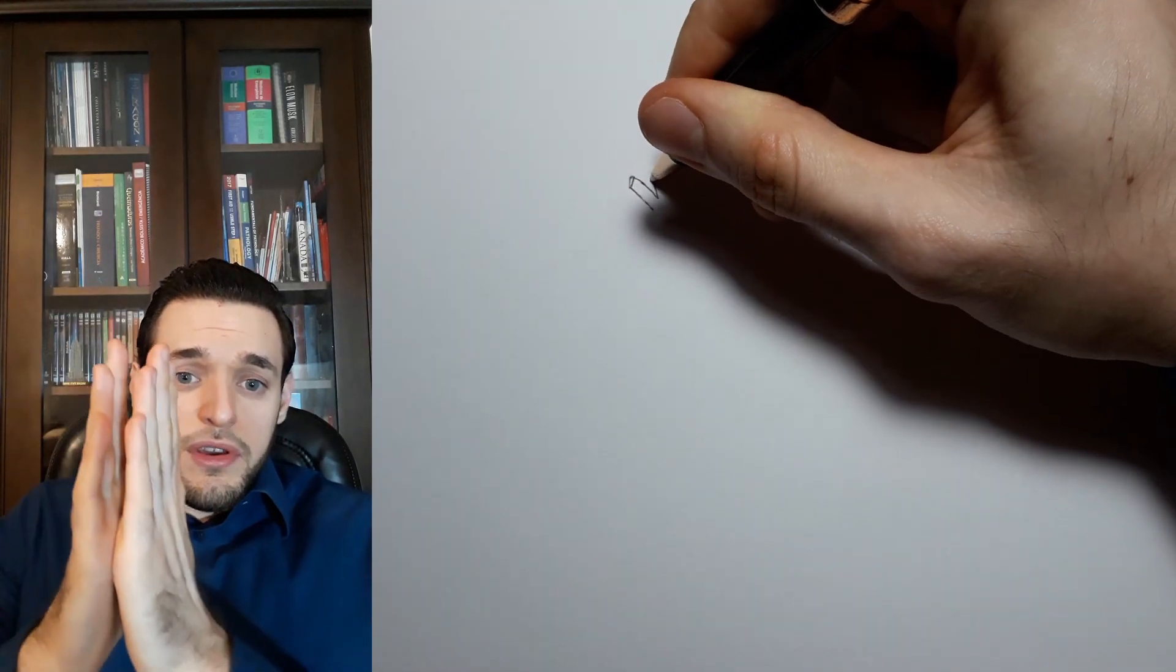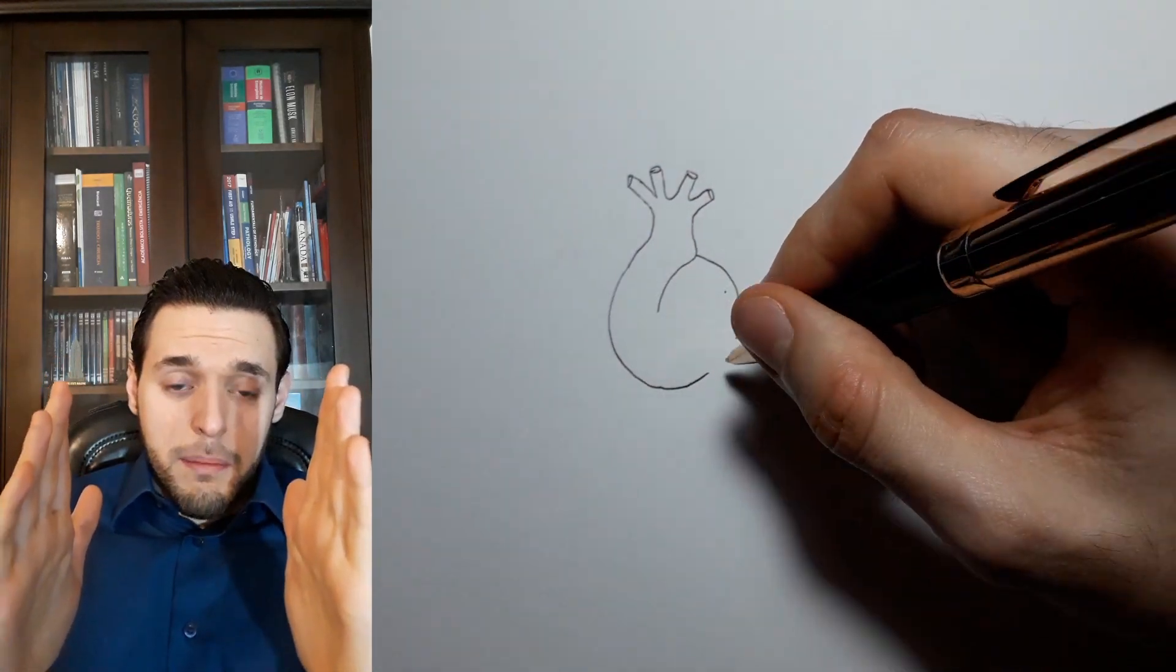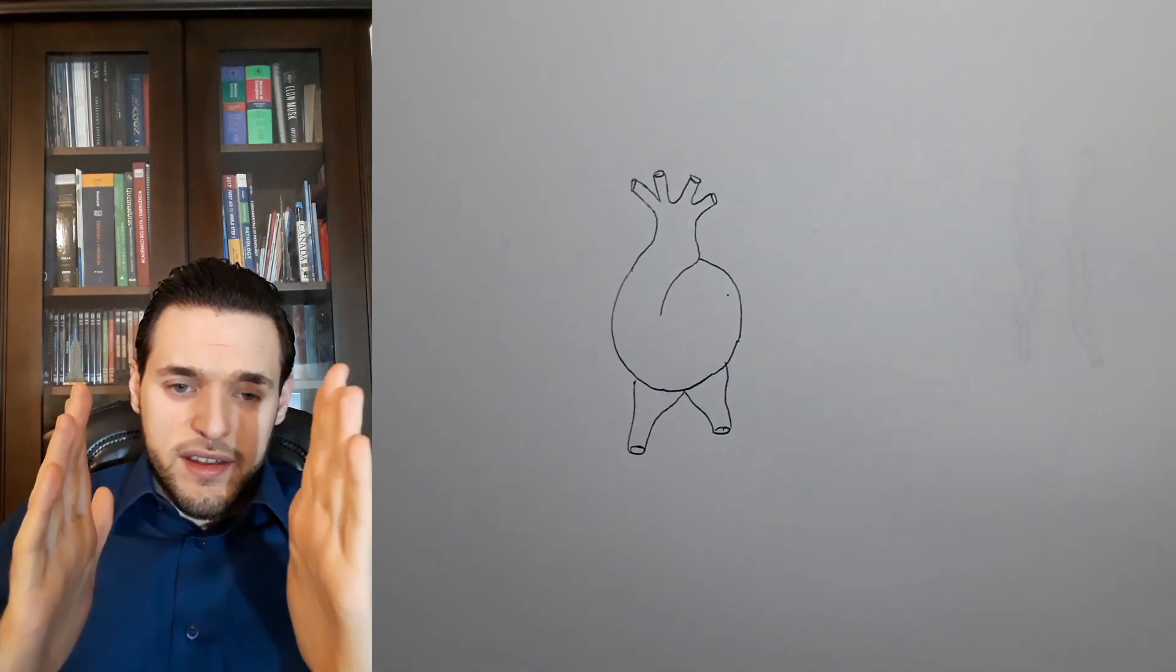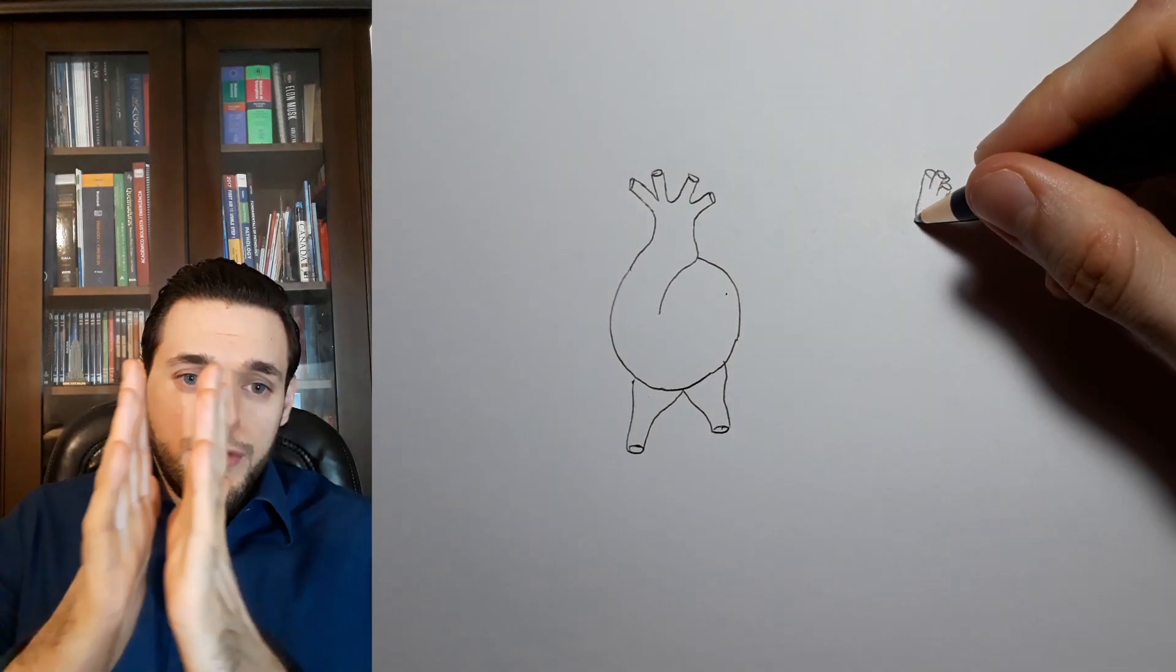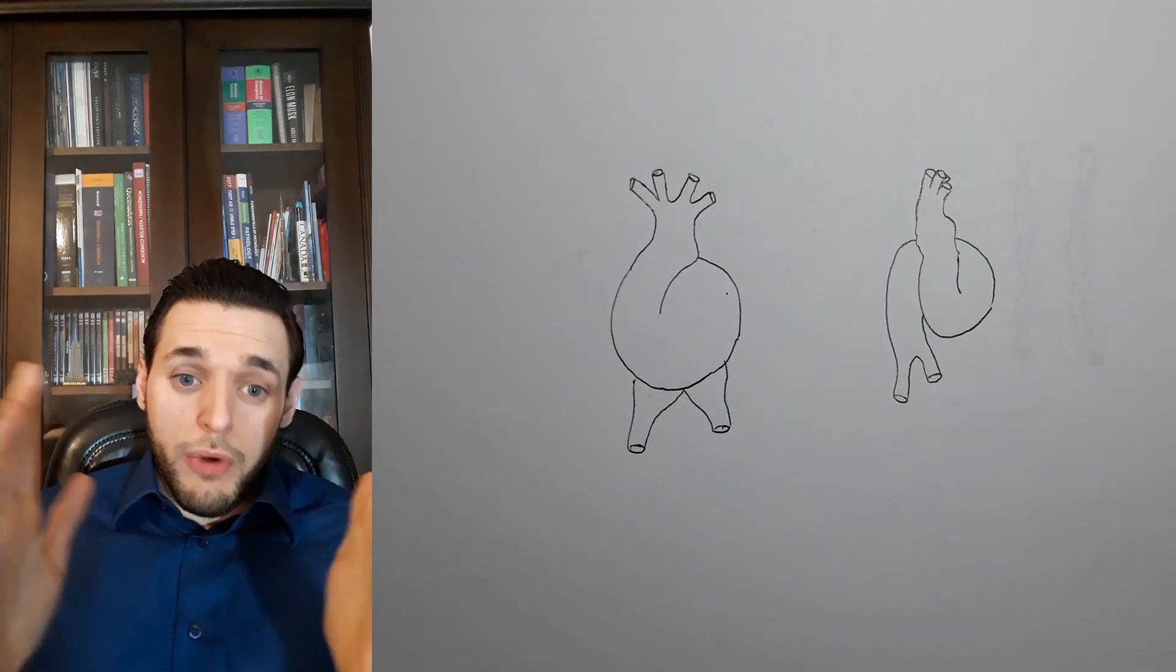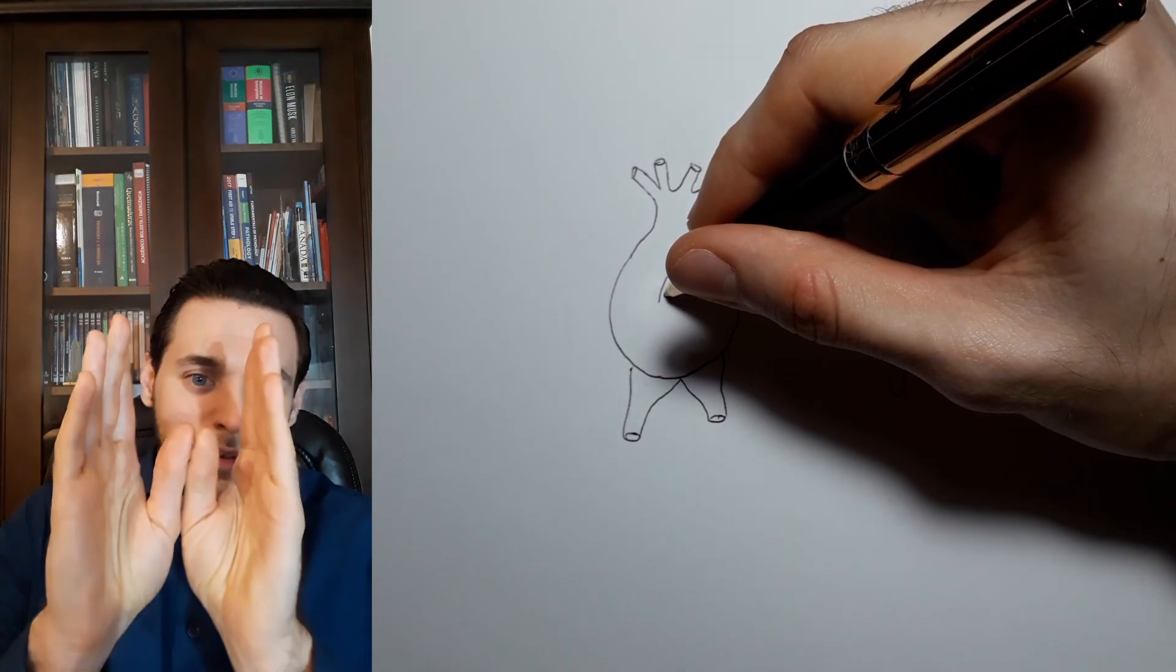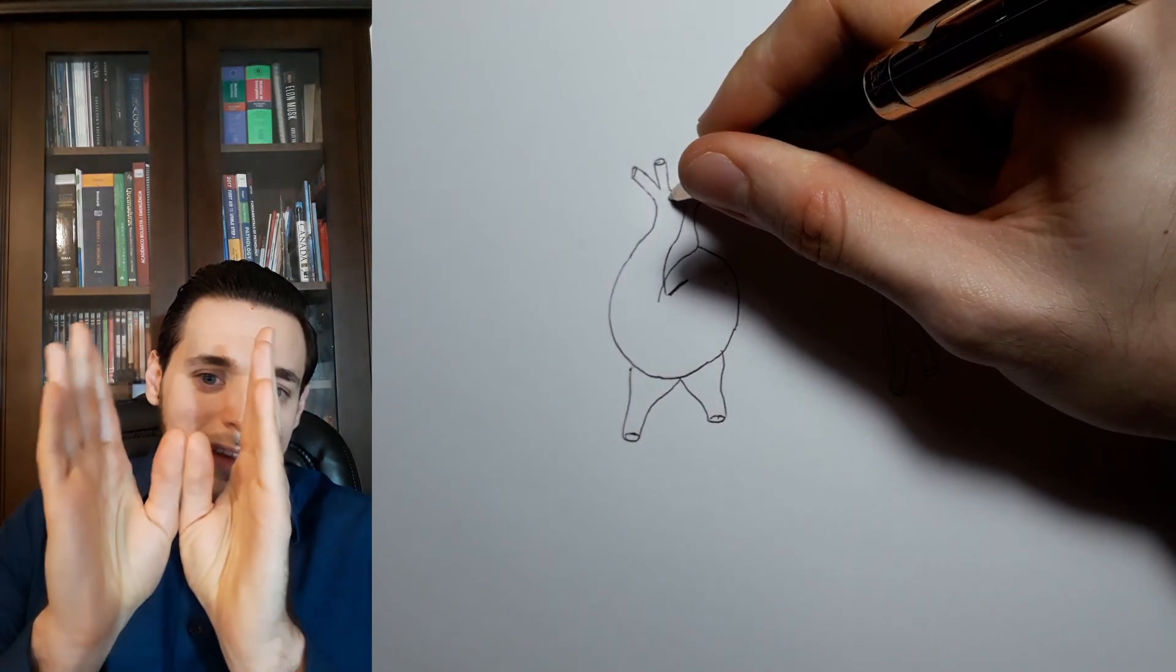However, for the primitive heart to form the two circulations we have as adults, the pulmonary circulation and the systemic circulation, it needs to be divided between right and left hearts, which, for the truncus arteriosus, means being septated into the aorta and the pulmonary trunk.